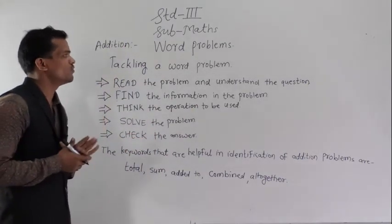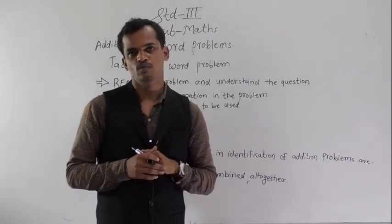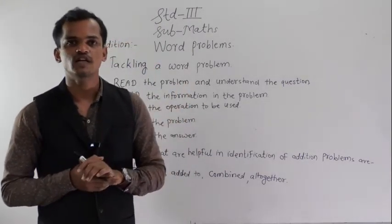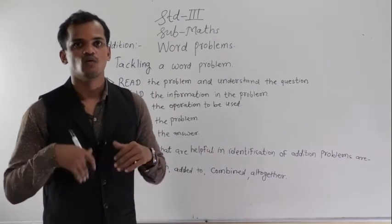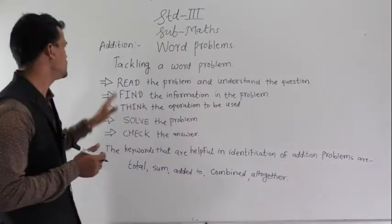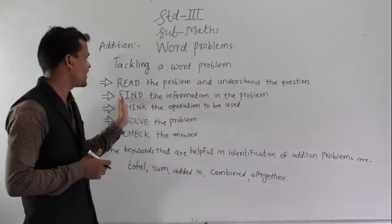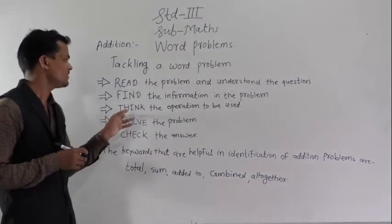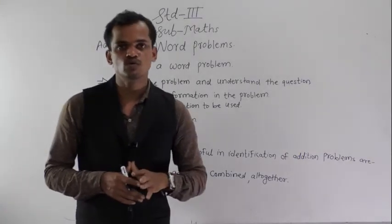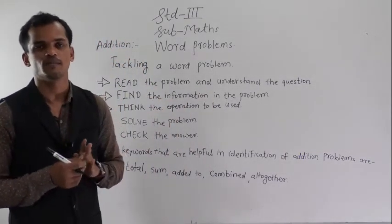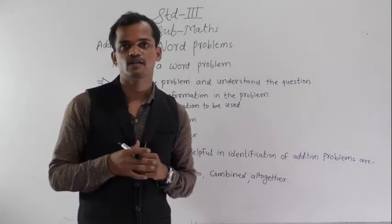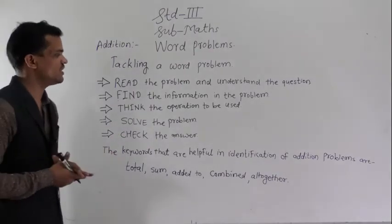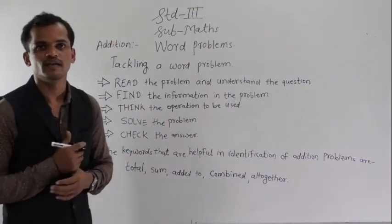Tackling a word problem means knowing how to solve it. First, read the problem and understand the question — read it twice and understand which things are given. Find the information in the problem. Then think about the operation to be used. There are four basic operations: addition, subtraction, multiplication, and division. Read the question thoroughly, understand which operation to apply, then solve the problem and check the answer. These are some guidelines to solve word problems.